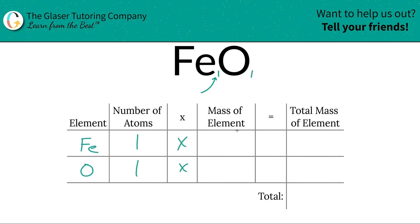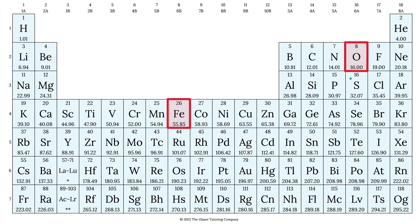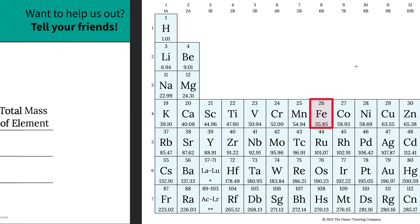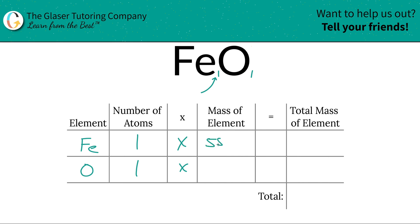Then we're simply going to multiply those number of atoms by the mass of each element. Those masses are found on the periodic table. So let's take a look. Here's iron, 55.85. Here's oxygen, 16. So those are the masses we're going to write down. This is 55.85, oxygen is 16.